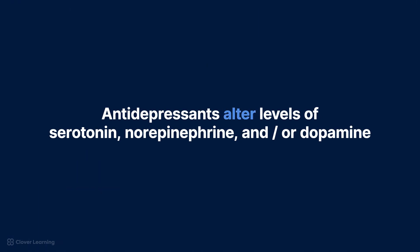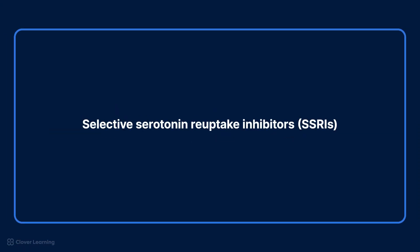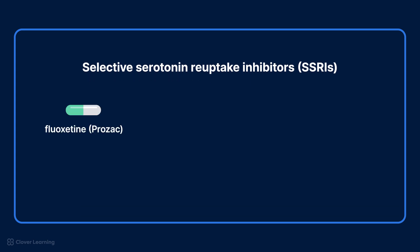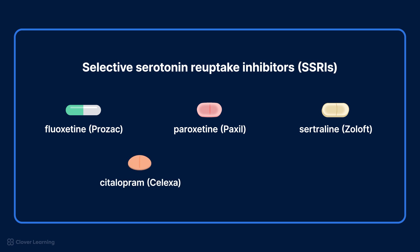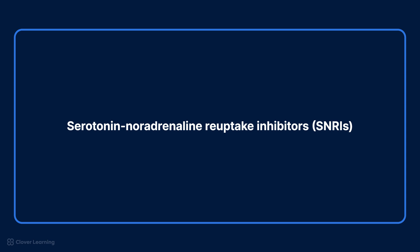Antidepressants alter the levels of serotonin, norepinephrine, and/or dopamine. Many types of antidepressants are available to treat depression, including selective serotonin reuptake inhibitors, or SSRIs: fluoxetine (Prozac), paroxetine (Paxil), sertraline (Zoloft), citalopram (Celexa), and escitalopram (Lexapro).